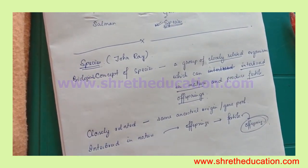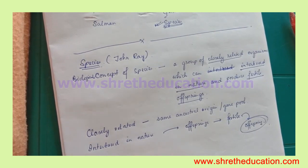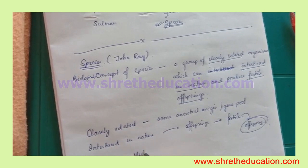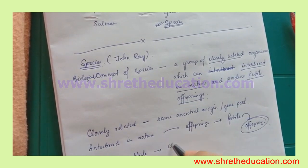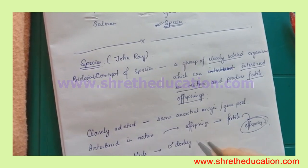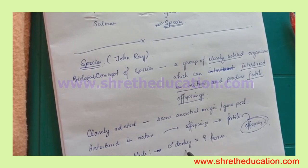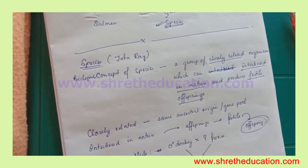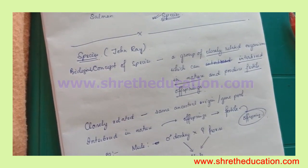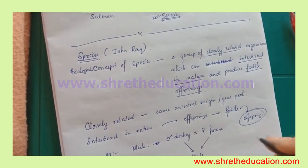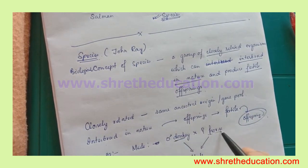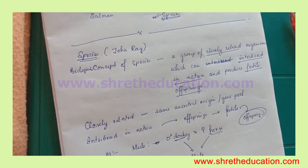An example of this concept: a mule is produced by crossing a male donkey and a female horse. The mule is infertile. Therefore, the donkey and the horse are considered different species, because their offspring cannot reproduce.